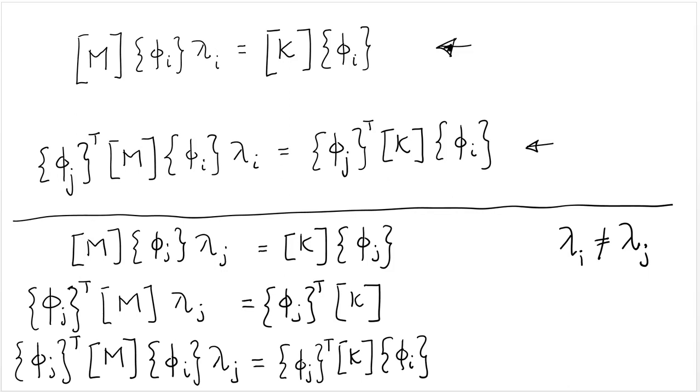If we then start and do a similar process with a different eigenvalue, eigenvector pair, let's say j, so we have m phi j, lambda j, k phi j, we transpose that. So here we transpose this equation to obtain this one.